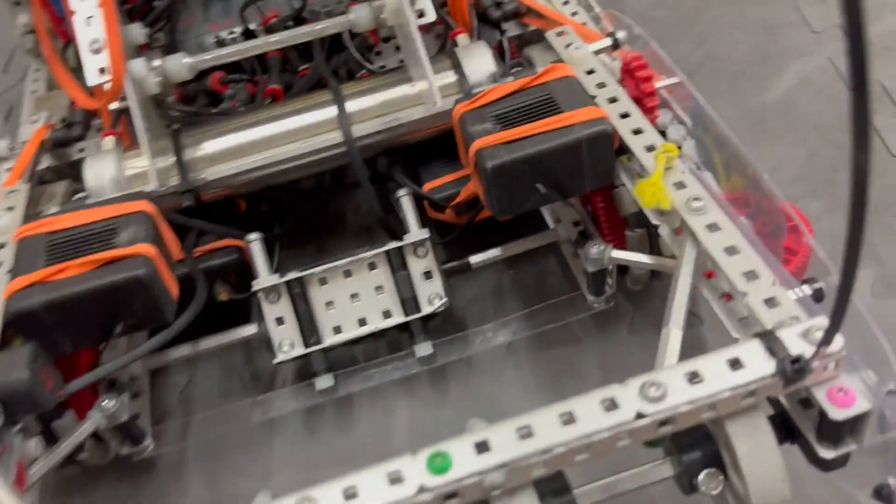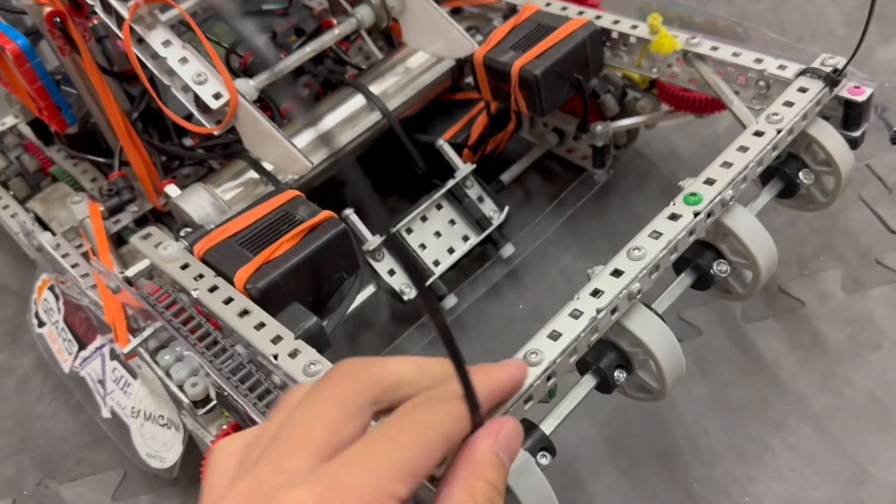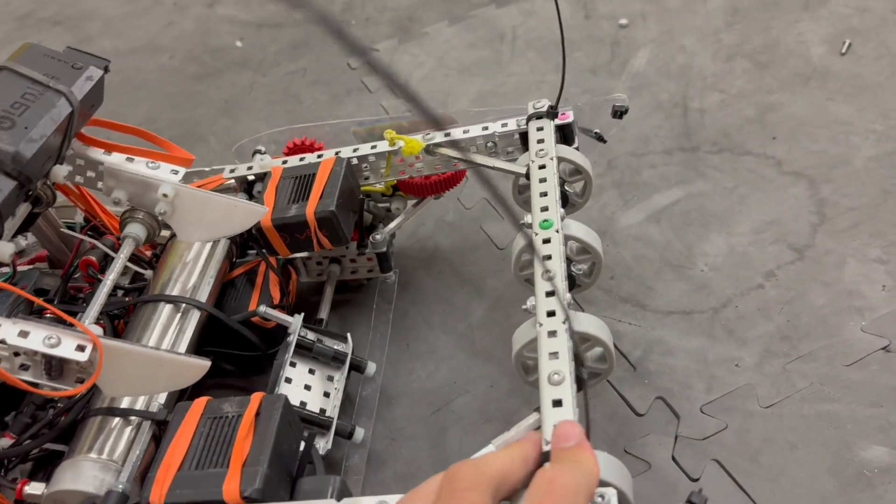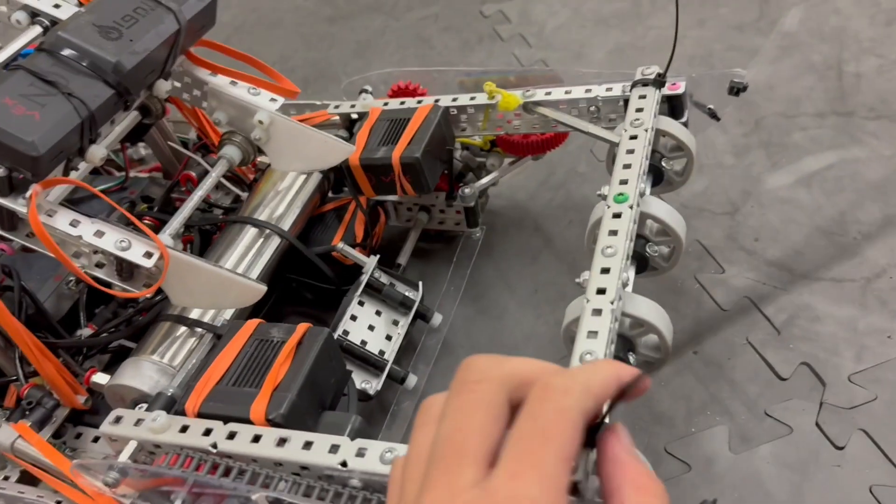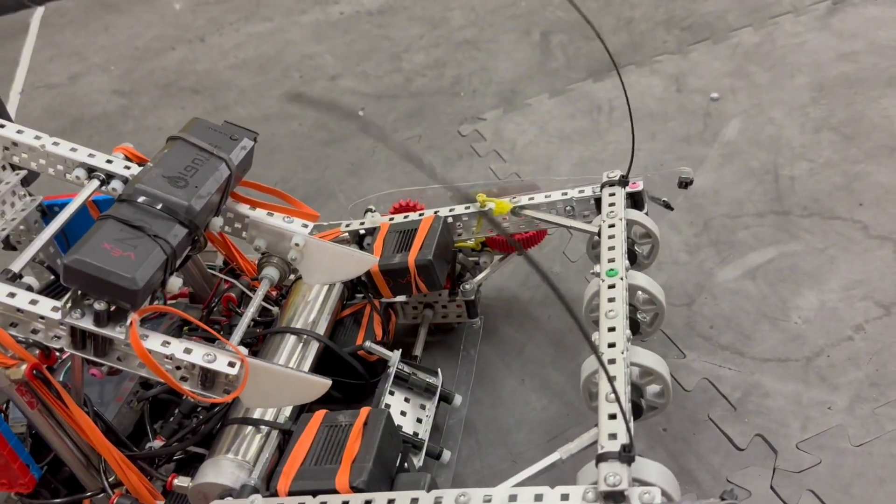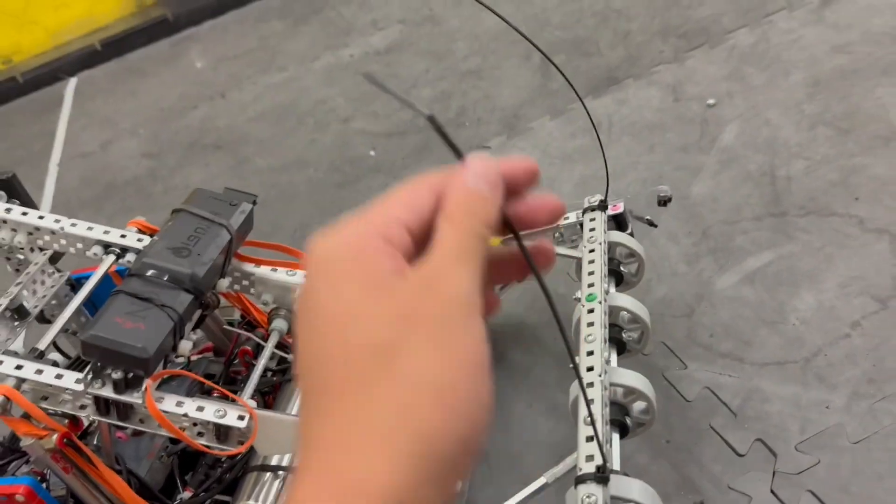And of course, we can't forget about the iconic eyelash mech. Shout out to 1095R on their explanation video. I watched it literally the night before this. But yeah, the eyelash mech is kind of cool. I think our robot is the slayest robot out on the field, just because how long these lashes are.